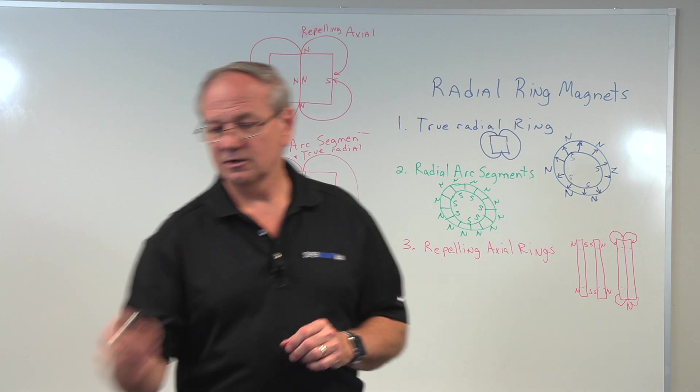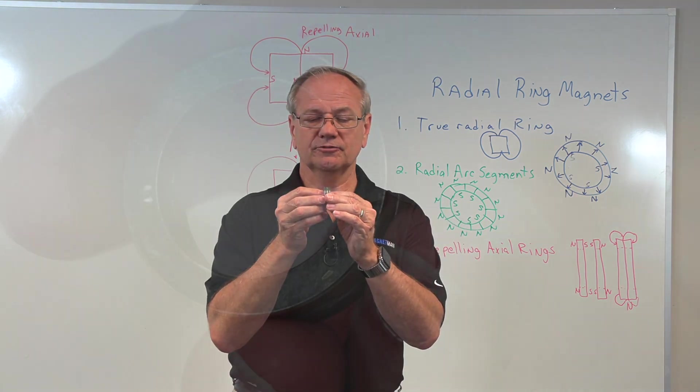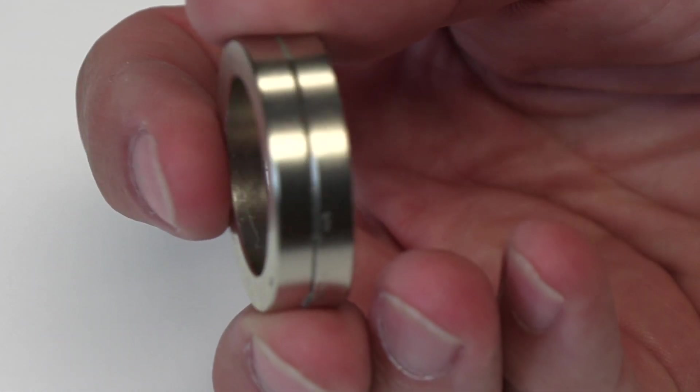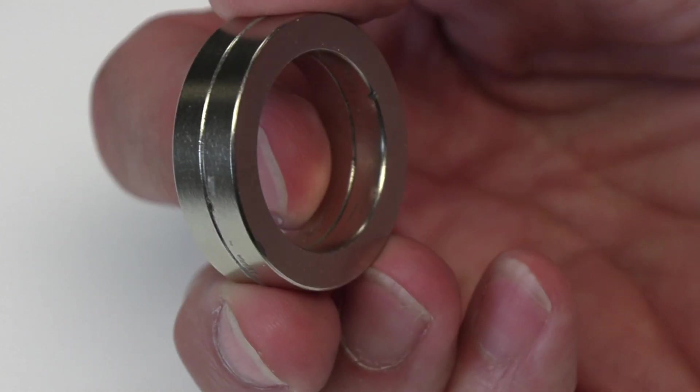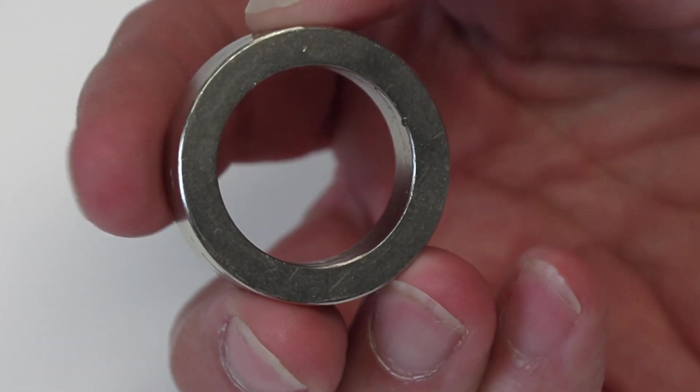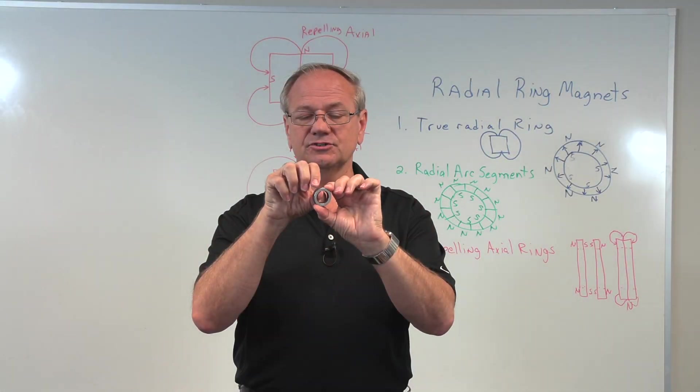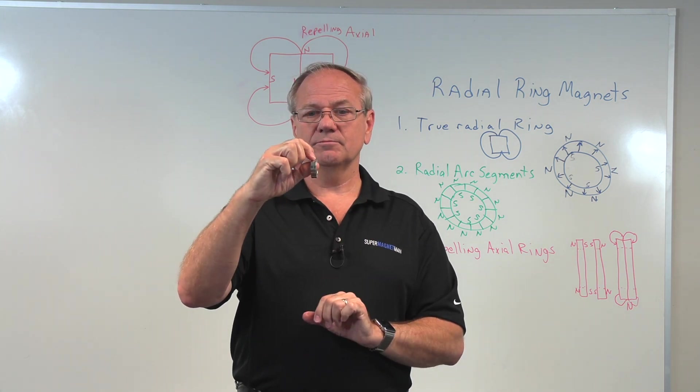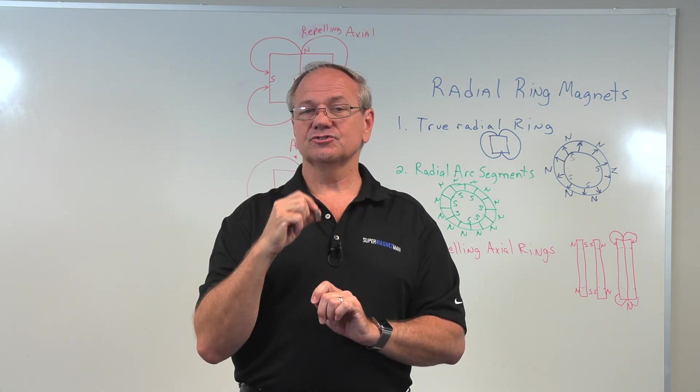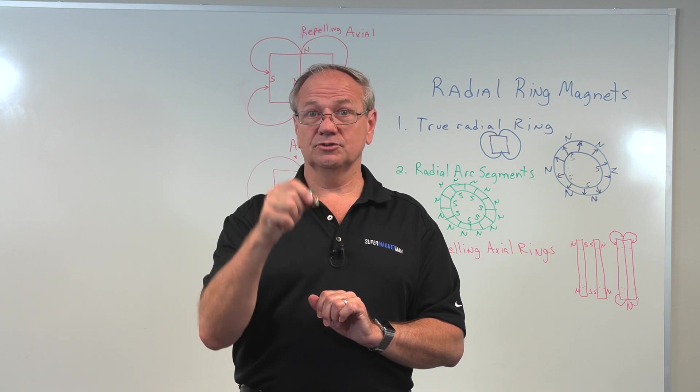Then we get to the ring magnets that are axial and forced together. One of the advantages is you do have the same pole on the inside circumference as the outside circumference. That's the same pole. And it gives us some interesting things we can do.